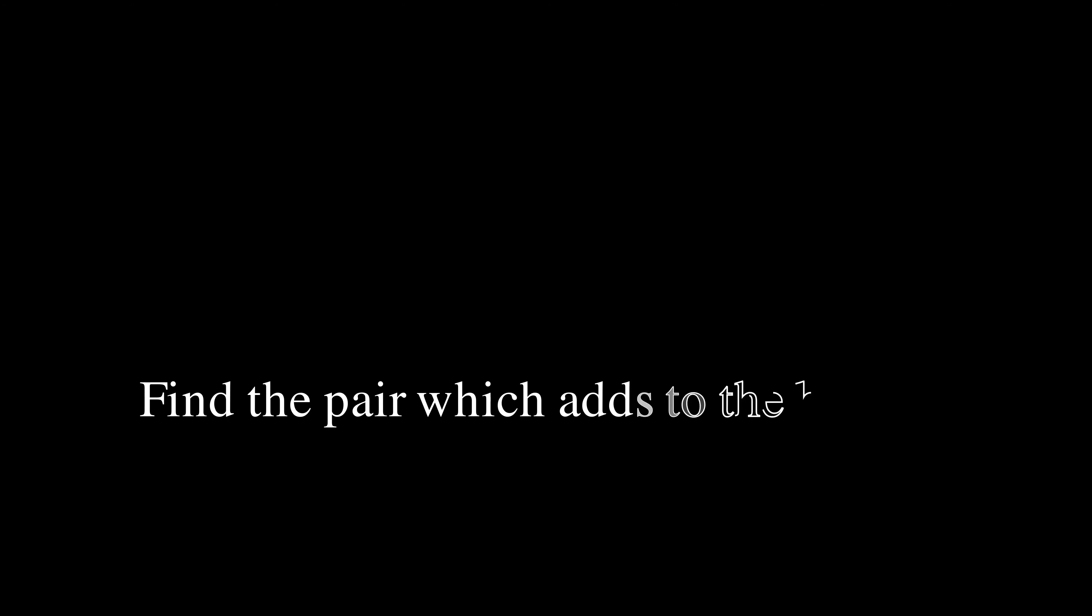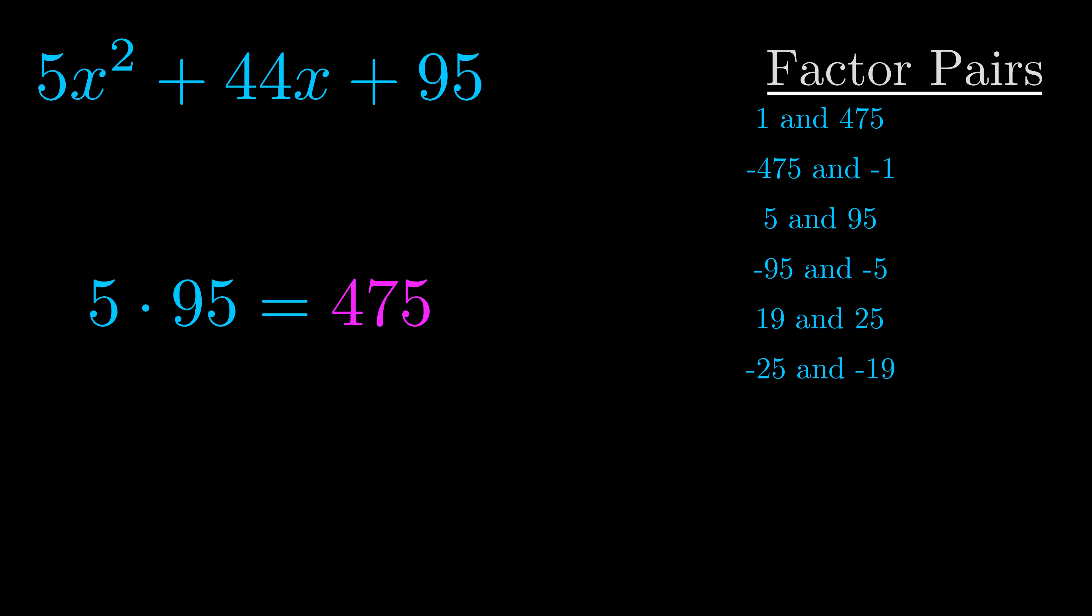The b value is the coefficient on the x term. That's the middle term, the one that we haven't done anything with yet. And really this is the only factor pair that we need.